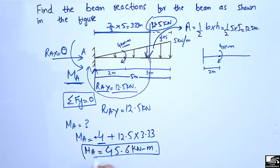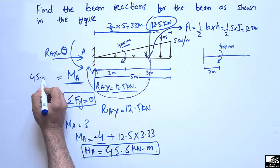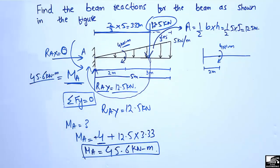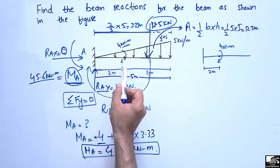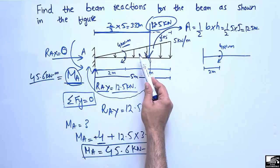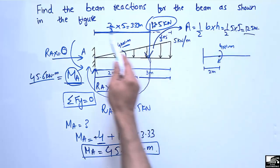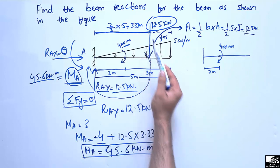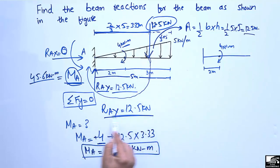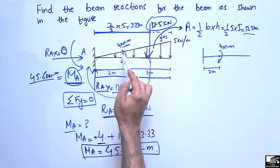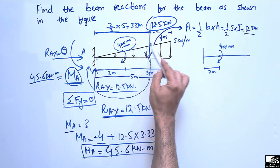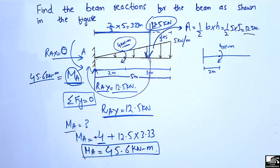To summarize: for a fixed beam with a moment and a uniformly varying load, first convert the UVL into a concentrated load, then find the centroid of the triangle, and then apply equilibrium equations at the support. The vertical reaction equals the total load of 12.5 kilonewtons, and the moment at point A equals all moments on the beam — the given 4 kilonewton meter plus 12.5 times the moment arm — giving 45.6 kilonewton meter.